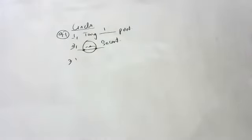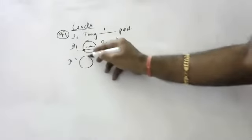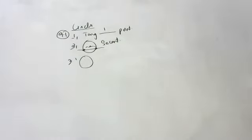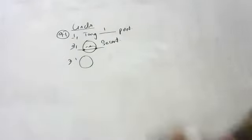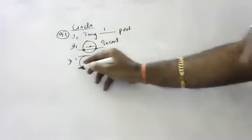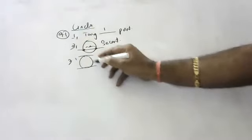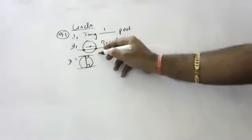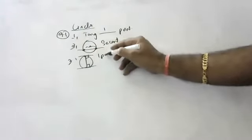A circle can have how many parallel tangents at the most? At a given point, the circle can have one pair of parallel tangents, because the co-interior angles are supplementary. One pair.